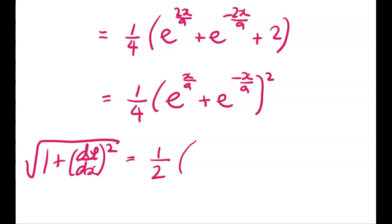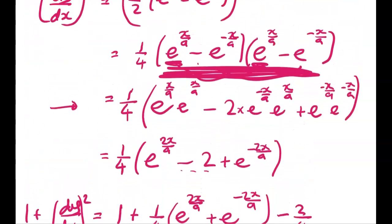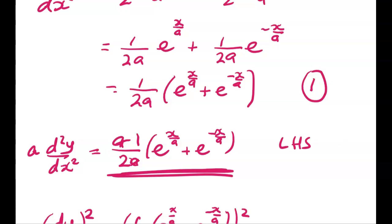But the next thing that we're going to do now is we're going to square root that. And so the square root of that is going to be 1 half e to the x over a, plus e to the negative x over a. And if you go back to where we were up here, that's exactly where we wanted to get to, right?